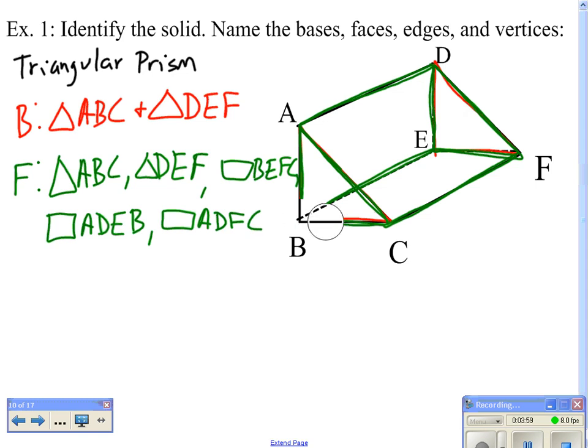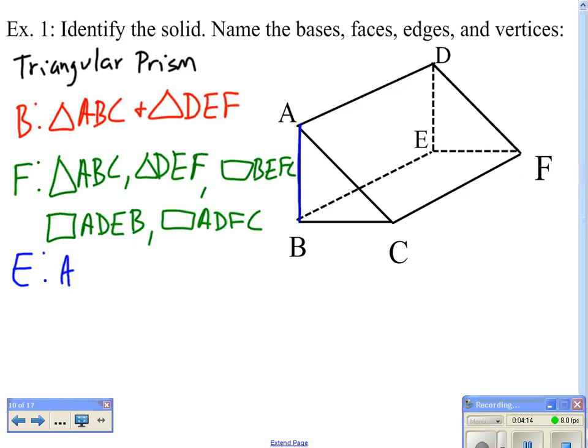Now, our edges are where all of these faces will meet—all of the line segments that are produced where these faces meet. So, for example, segments AB, BC, and AC would all be edges.